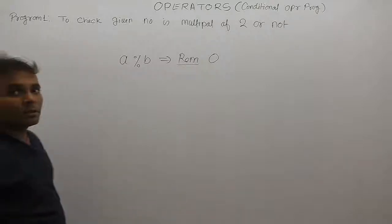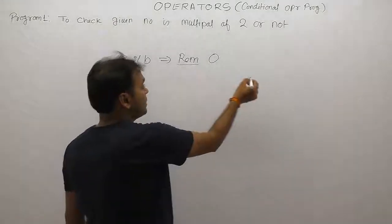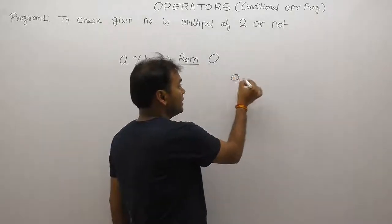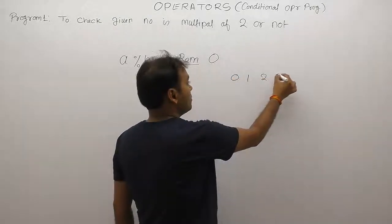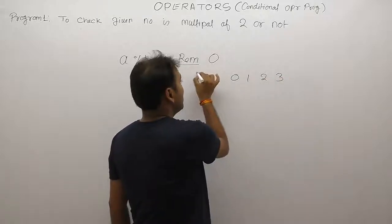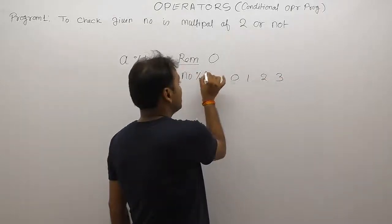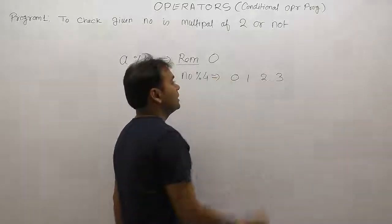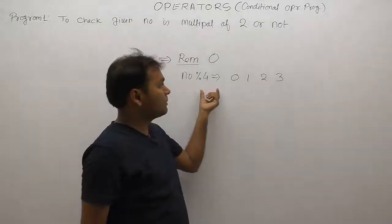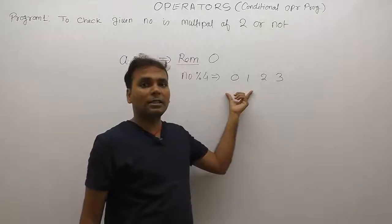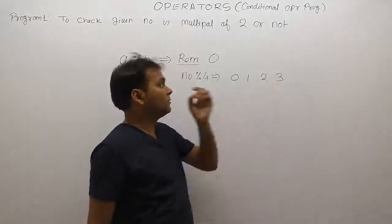When any number is divided by 4, the possible remainders are either 0, 1, 2, or 3. So modulo by 4 gives any number divided by 4 one of those four possible remainders.